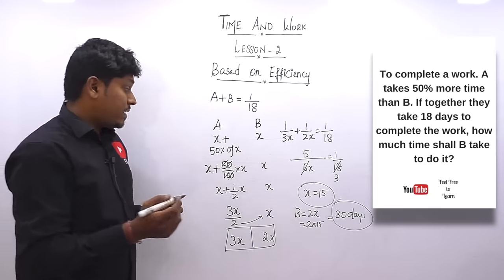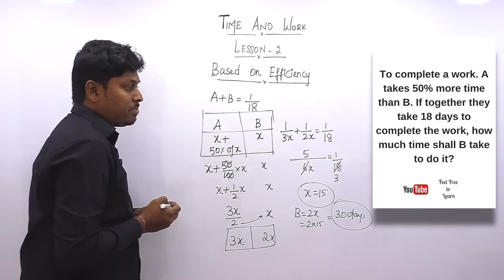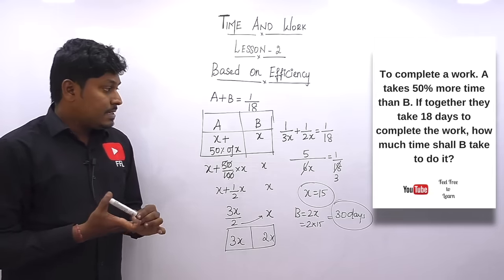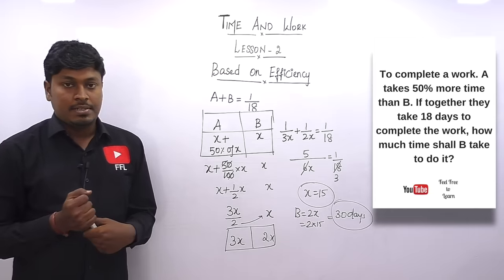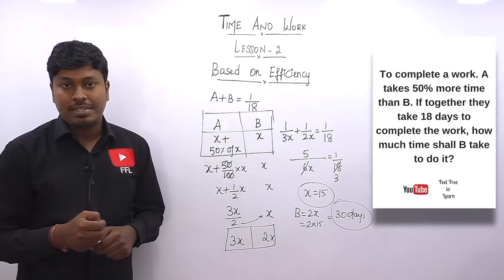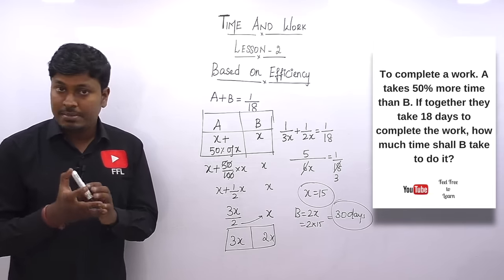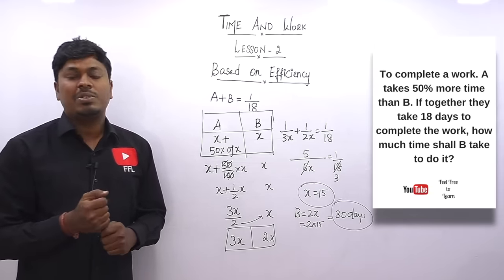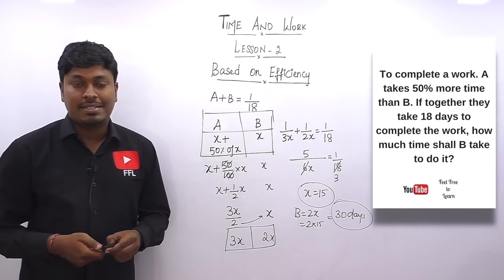The key is knowing how to write the equation correctly. For 40% more time or 70% more time, the same logic applies. In lesson two, we solved five different questions based on efficiency and more time. Once you understand the concept, take your books and practice 10 to 20 questions on this pattern. Then move on to higher-level questions like CAT or SBPO questions. Thank you for watching, and if you liked it, please share with friends preparing for competitive exams.